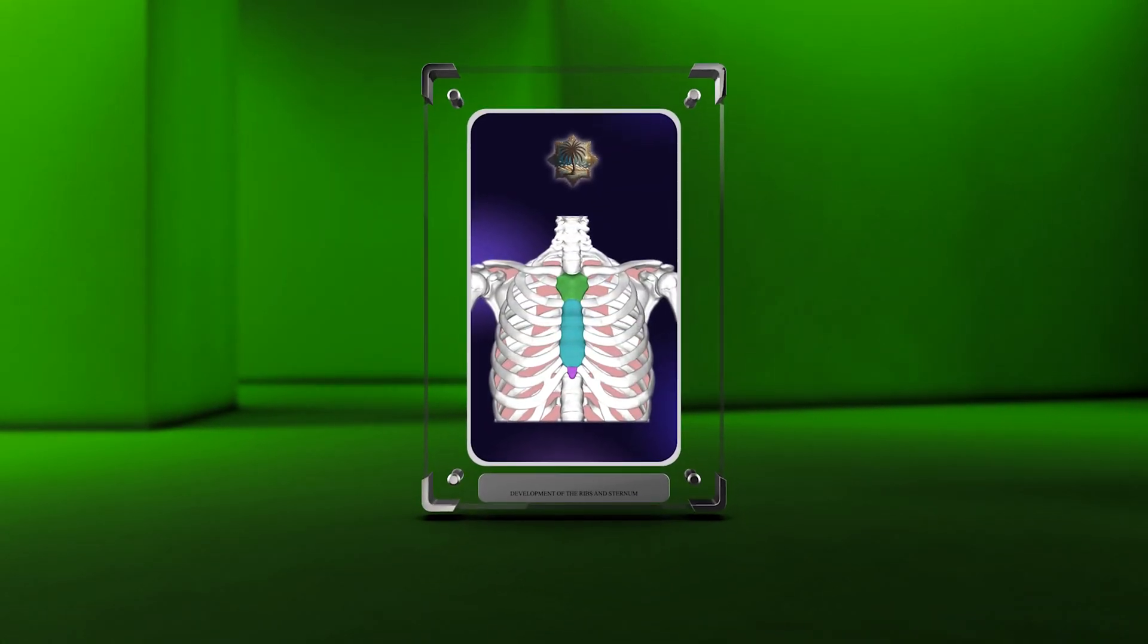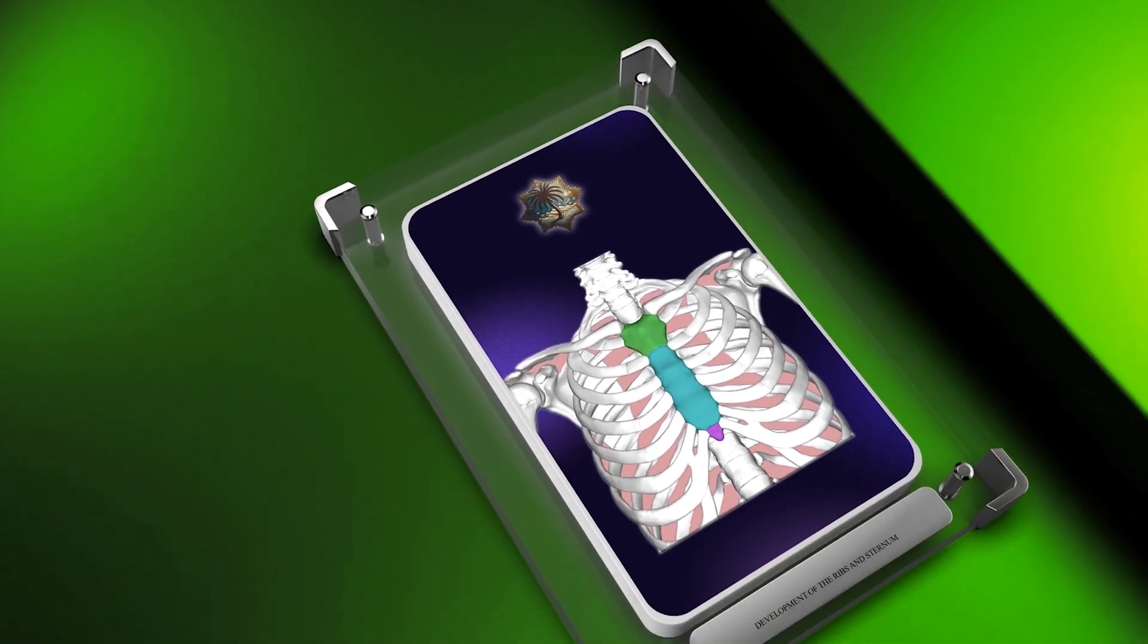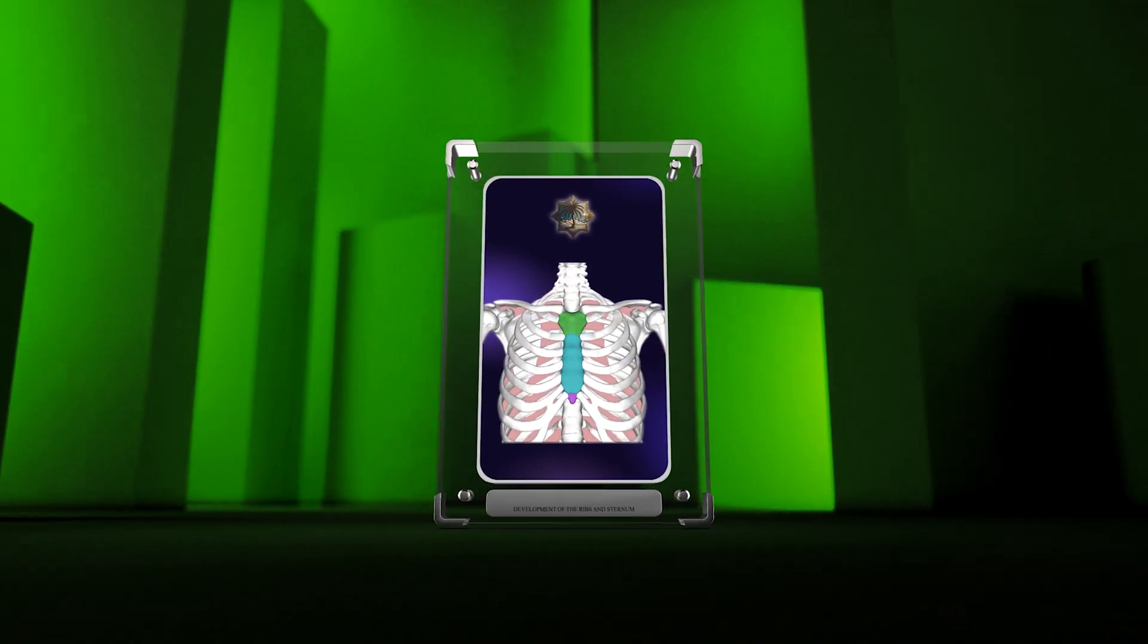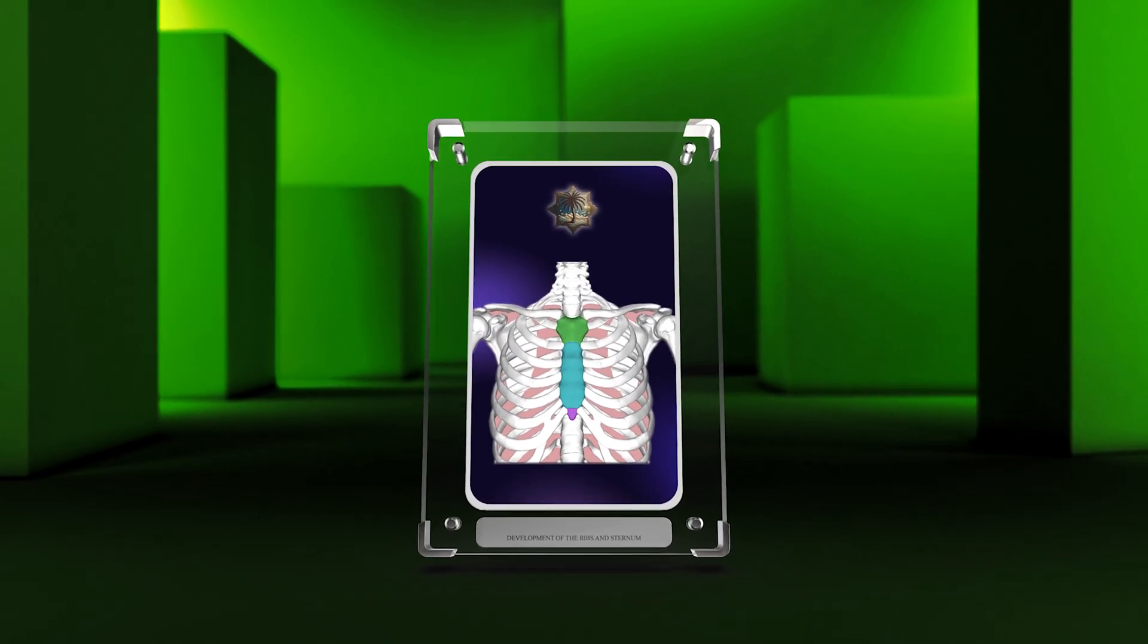In this video we will explore the development of the ribs and sternum. We will cover the formation of progenitor cells, the specification of rib segments, and the role of signaling pathways, mechanical forces, and genetic factors. We will also discuss the implications of malformations and potential therapeutic approaches.